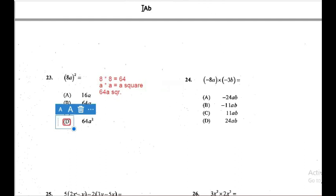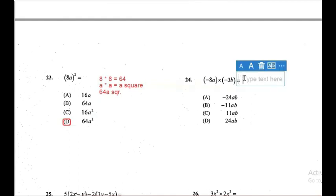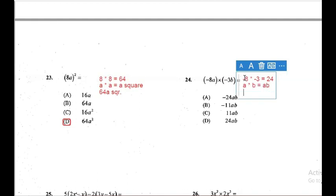Question 24: negative 8A multiplied by negative 3B. Breaking it apart — multiply numbers by numbers, then letters by letters. Negative 8 times negative 3: remember a negative times a negative gives a positive, so that's positive 24. And A multiplied by B gives AB. Our answer is 24AB, which is D.